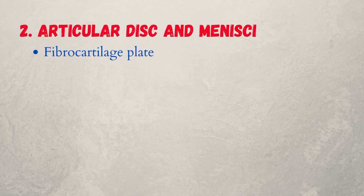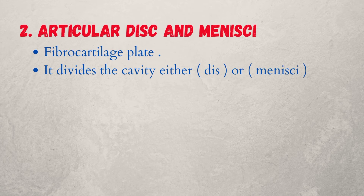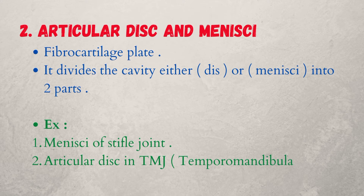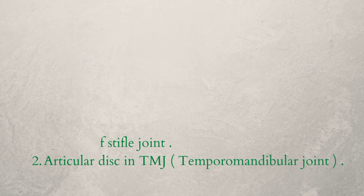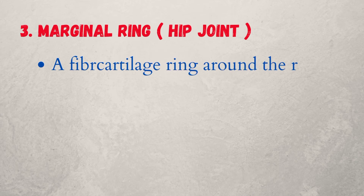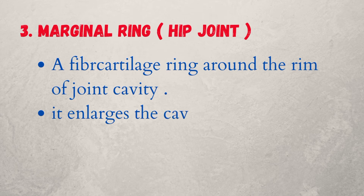Two, articular disc and menisci — a fibrocartilage plate that divides the cavity into two parts, either as a disc or menisci. Examples: menisci of the stifle joint, and articular disc in the temporomandibular joint (TMJ). Three, marginal ring of the hip joint — a fibrocartilage ring around the rim of the joint cavity that enlarges the cavity and prevents margin fracture.